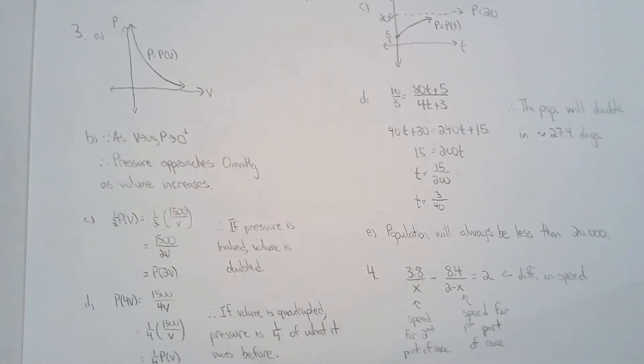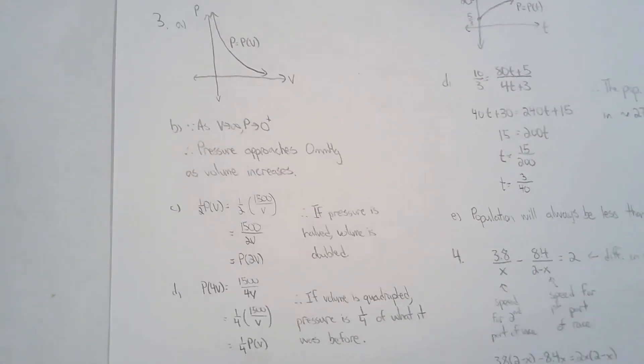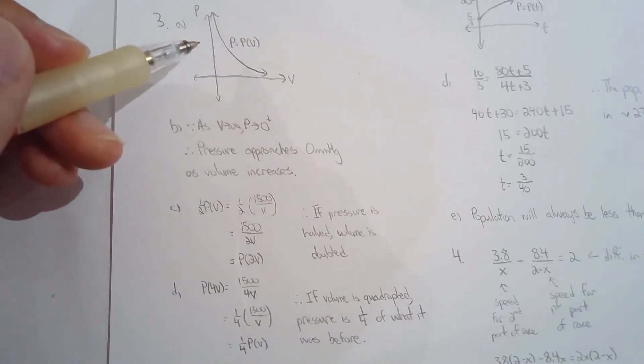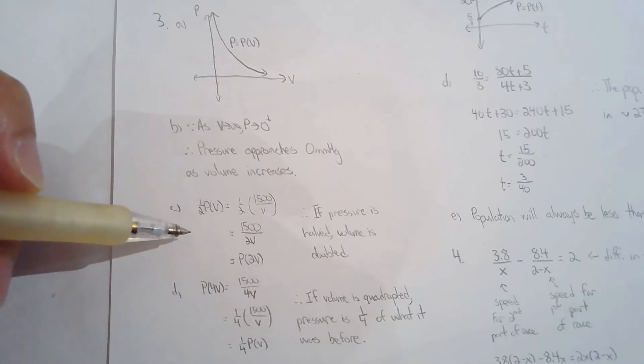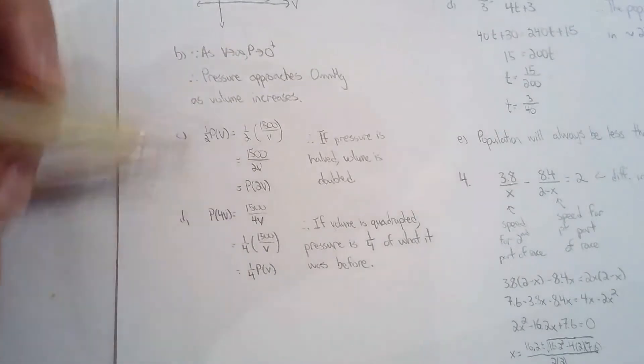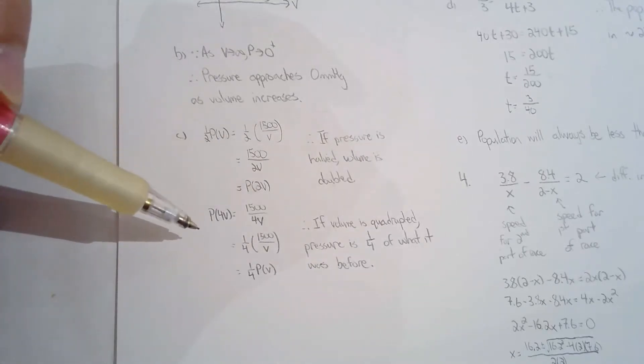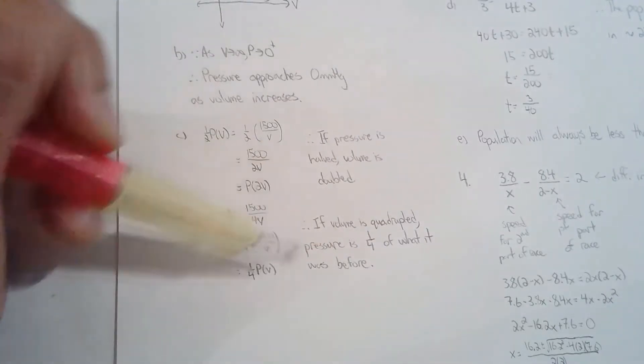For question three we have pressure and volume and they're inversely proportional. They ask us for the graph, they ask us for the significance of the horizontal asymptote, they ask what happens when the pressure is halved and how the volume is going to be changed. Different notation you can use but the idea is the same. If you halve the pressure, you'll see that the volume is doubled. If the volume is quadrupled then the pressure is a quarter of what it was before.